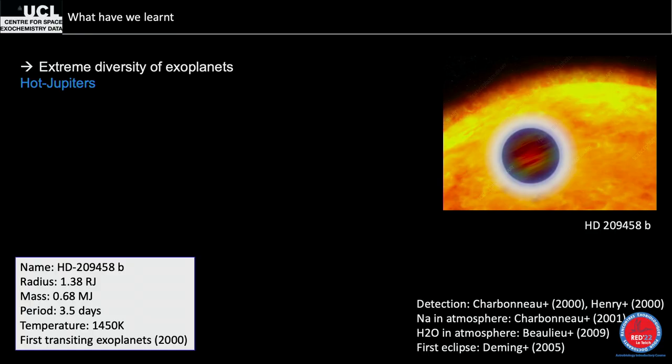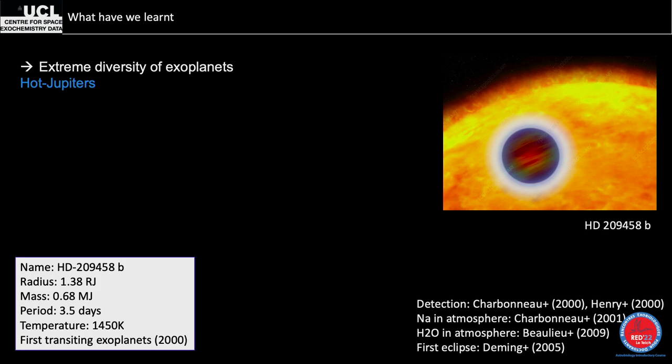For hot Jupiters, I've chosen HD 209458b because it was the first transiting exoplanet detected in 2000. It's 1.38 Jupiter radii, orbits in 3.5 days, and has a temperature of 1,500 K. There are thousands of papers on this planet — if you're interested in one planet, start here.